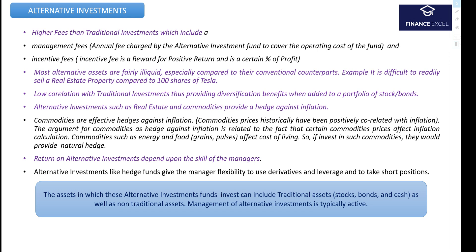Alternative investments have low correlation with traditional investments and thus provide diversification benefits. When we add alternative investments to a portfolio of traditional investments, they are likely to reduce volatility. Additionally, alternative investments such as real estate and commodities provide a hedge against inflation — commodities are included in the calculation of inflation and thus provide a natural hedge.